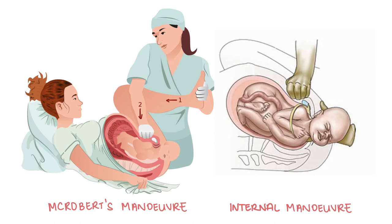First-line manoeuvres for the management of shoulder dystocia include McRoberts and suprapubic pressure. McRoberts involves getting the mother to bring her knees to her chest and to stop pushing, which widens the pelvic outlet and leaves room for the shoulder to dislodge. Suprapubic pressure involves pushing behind the baby's anterior shoulder to help disimpact it from the maternal symphysis. If these are unsuccessful, internal manoeuvres must be used, sometimes preceded by an episiotomy. Options include delivering the posterior arm and internal rotation of both shoulders while applying suprapubic pressure.